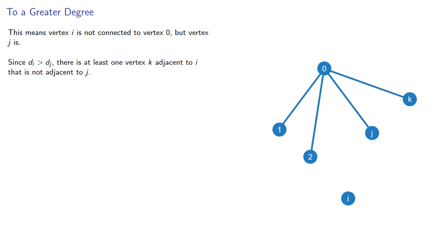Since the degree of vertex i is greater than the degree of vertex j, then there's at least one vertex k adjacent to i that's not adjacent to j.